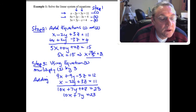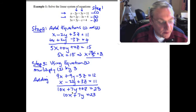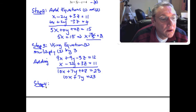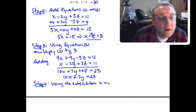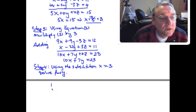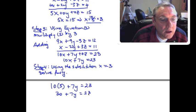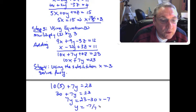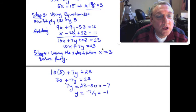Step four: substituting x = 3 into 10x + 7y = 23 gives 10(3) + 7y = 23, so 30 + 7y = 23, therefore 7y = 23 - 30 = -7, and y = -1. Now we have x = 3 and y = -1.